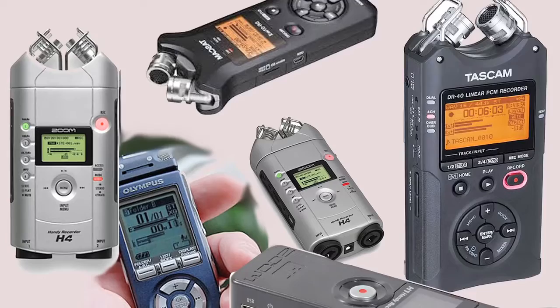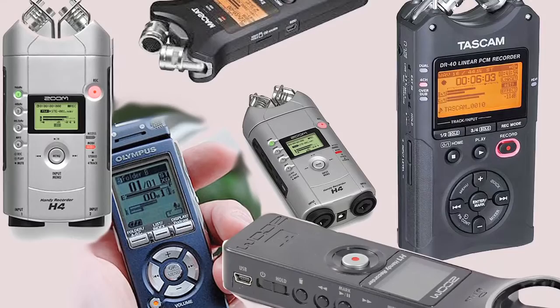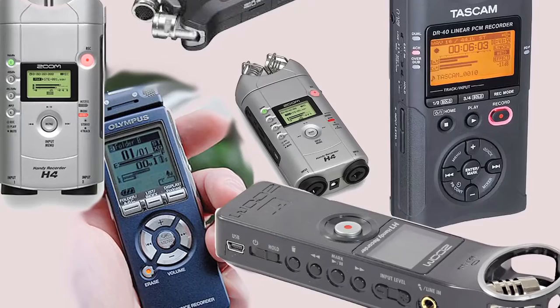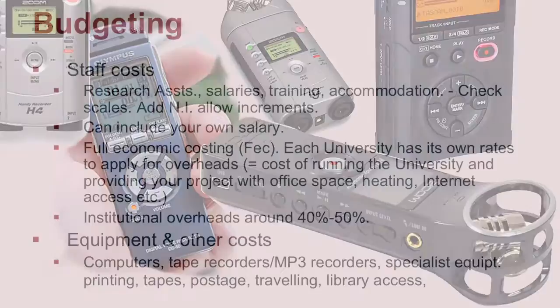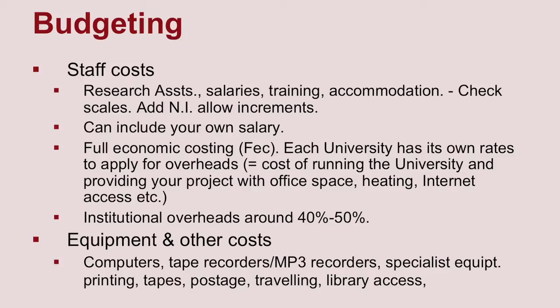How much do you think a good digital recorder costs? It's nearly £200. Good quality digital recorders are not cheap — there are better ones costing about £250. If you're doing interviews it's quite important to get good quality recordings — a good microphone helps enormously. This recorder does MP3 or WAV files, which are CD quality. You might also need other specialist equipment depending on your discipline.